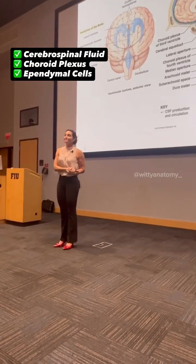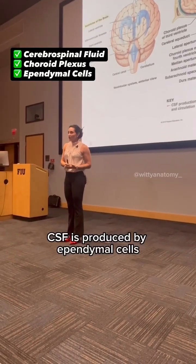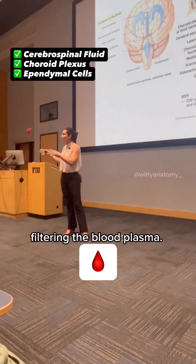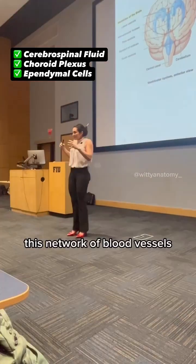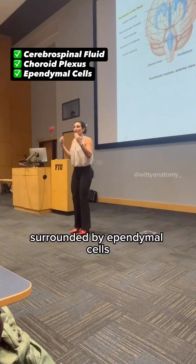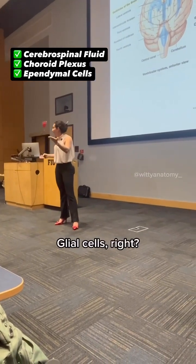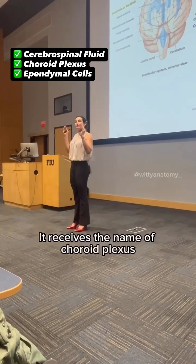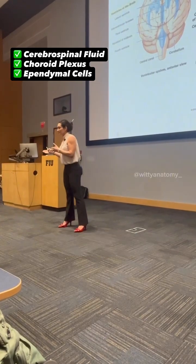What's the CSF? CSF is produced by ependymal cells filtering the blood plasma. This network of blood vessels surrounded by ependymal cells, which are one of the types of glial cells, receives the name of choroid plexus.